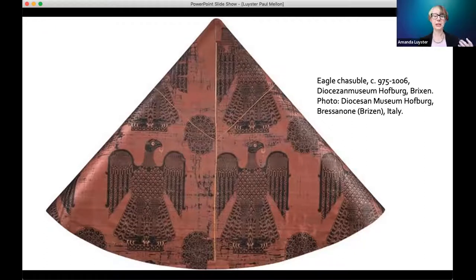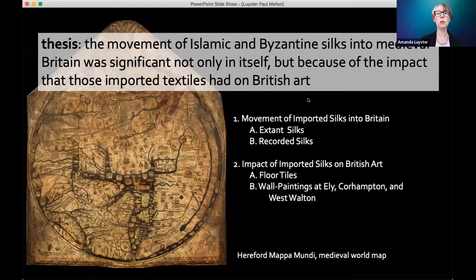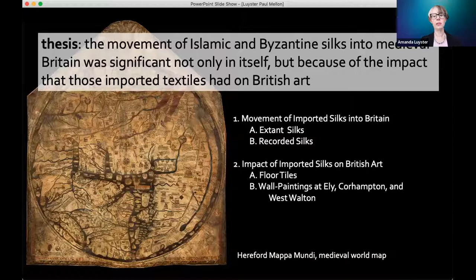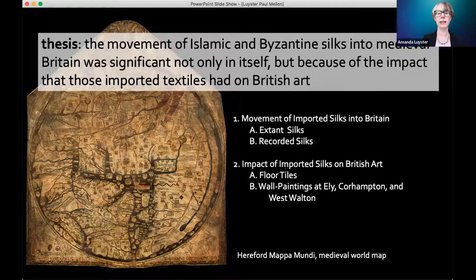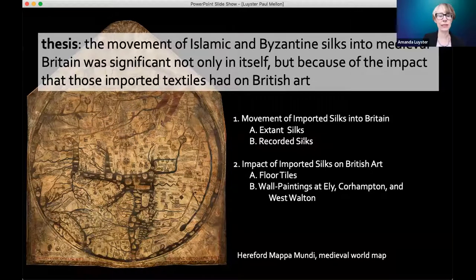So that concludes my introduction. The remainder of today's lecture will be laid out as follows. My thesis has two halves: the movement of imported silks into Britain, and the impact of those silks on British art. Each of those halves is then divided into two parts. In the first half, I look at extant silks and then records of silks. In the second half, I look at the Chertsey tiles — which are floor tiles — and then at some wall paintings.